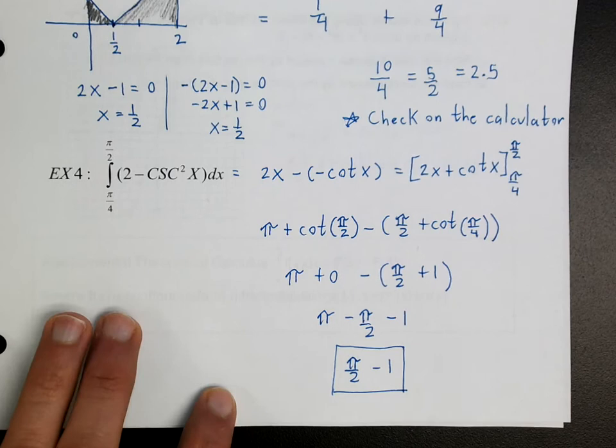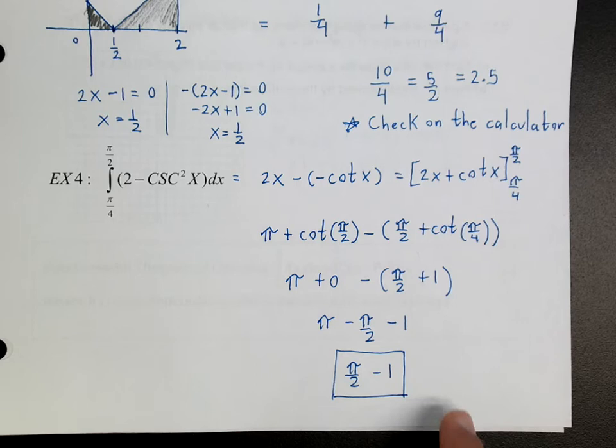Make sure you work through this one yourself. Now π/2 minus 1, if you do that on the calculator, is going to give you a numeric value, not a pi symbol. But it should be the same answer.